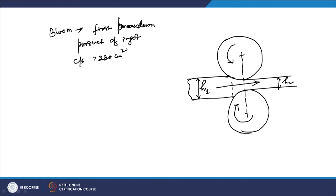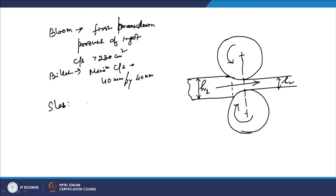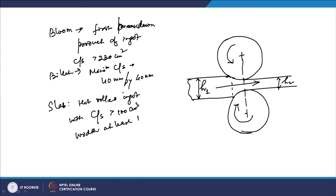When the bloom is further reduced in dimension we get the billet. The minimum cross-sectional area of a billet is 40 mm × 40 mm. The slab is the hot-rolled ingot with a cross-sectional area greater than 100 cm² and width at least twice the thickness.